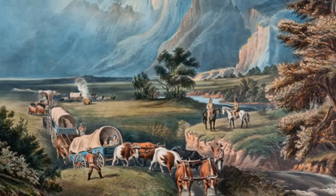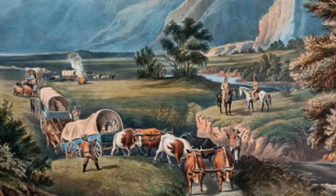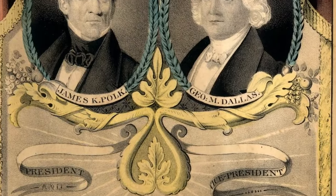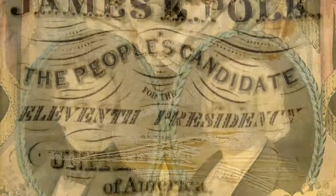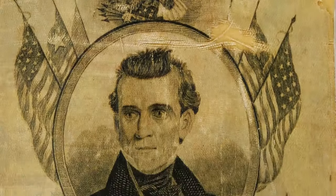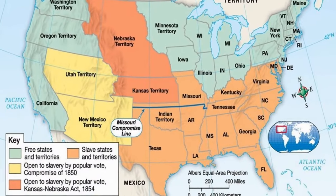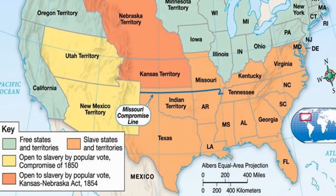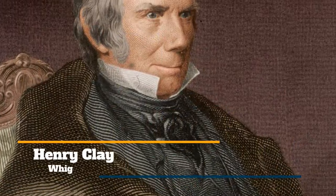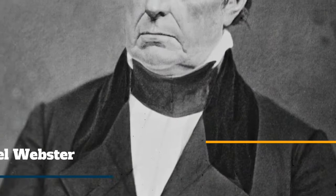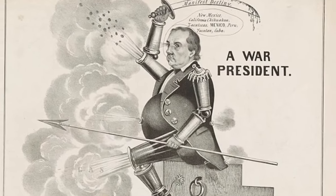Another important idea to understand is that manifest destiny was controversial. One of the great myths surrounding manifest destiny is that it was supported by the entire country, when in reality there were many Americans who opposed it. Manifest destiny drew most of its support from Democrats, especially Southern Democrats, who viewed territorial expansion as a way of expanding the institution of slavery. Since most of the territory being added in the 1840s was below the Missouri Compromise line, the power of the South would increase as new territories such as Texas would be admitted as slave states. Many Northern Whigs, as well as abolitionists and anti-slavery forces, were typically opposed to manifest destiny, concerned about the expansion of slavery out West. And there were a number of people who saw events such as the Mexican-American War as immoral land grabs.